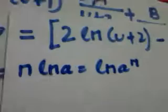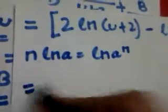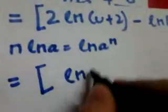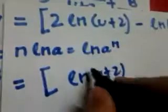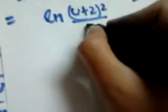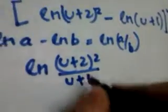Now let's put in the limits from 1 to 4. Also remember that n·ln(a) equals ln(a^n), and ln(a) minus ln(b) equals ln(a/b). Applying these, we can write 2 ln(u+2) as ln(u+2) squared. So the expression becomes ln(u+2)² minus ln(u+1), evaluated from 1 to 4. Applying ln(a) - ln(b) = ln(a/b), we get ln[(u+2)²/(u+1)].